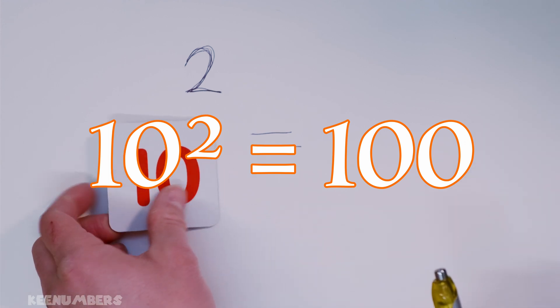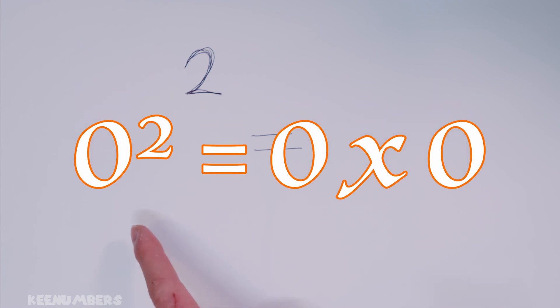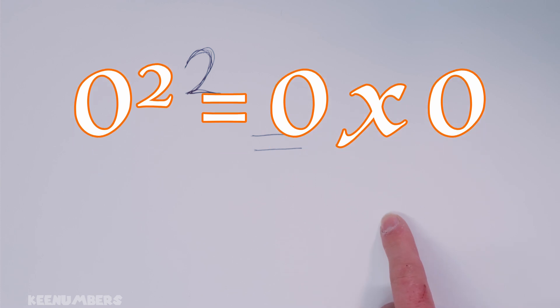Now let's make it really challenging. What is zero squared? That means nothing by nothing. That's a big whopping nothing.